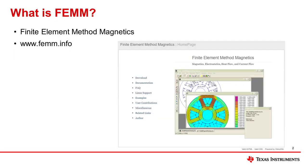FEM, or Finite Element Method Magnets, is a simulation software that can be used to simulate the magnetic fields involved in various applications. The FEM homepage can be found at www.fem.info, and they show a motor as their example. They have many other examples and documentation available as well. This tool is very useful to see the impact a metal target has on an inductive sensor and is used in the FEM spreadsheet.